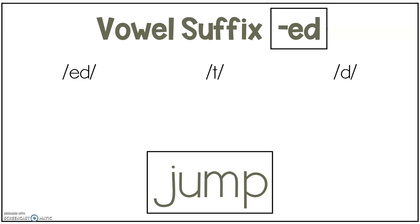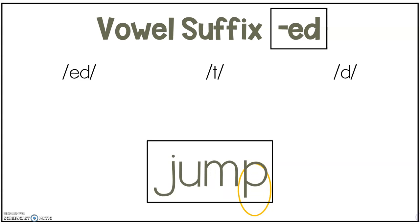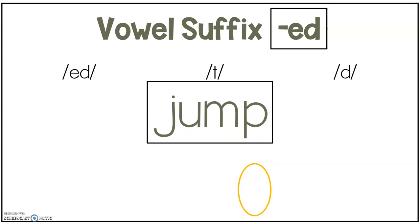Let's try to sort some of these words. The first word we have here is jump. Look at the last sound in the base word: puh. Feel your throat. Is that sound voiced or unvoiced? It's unvoiced, so we're going to move it here. The vowel suffix ED would make the T sound after the word jump.